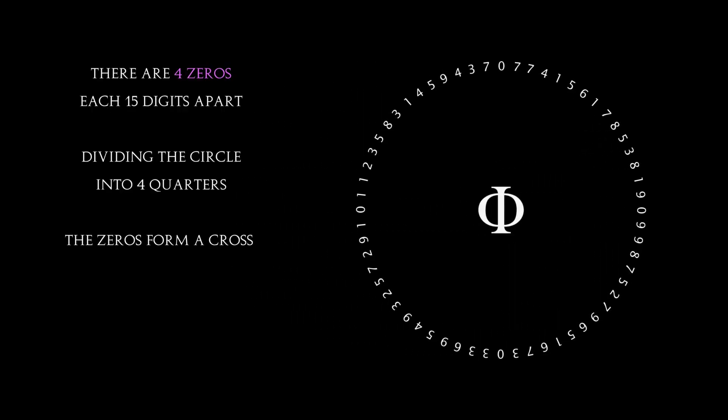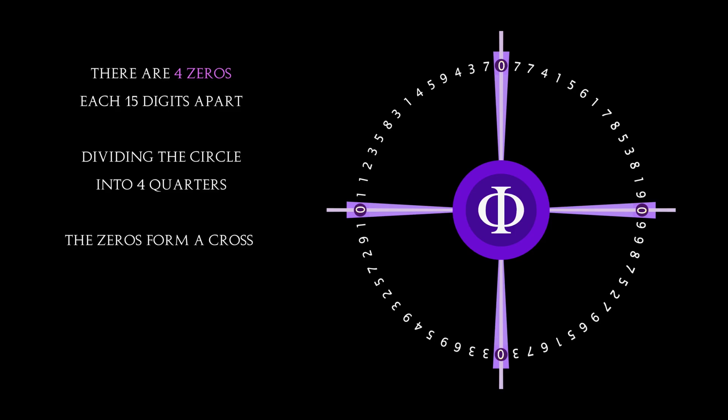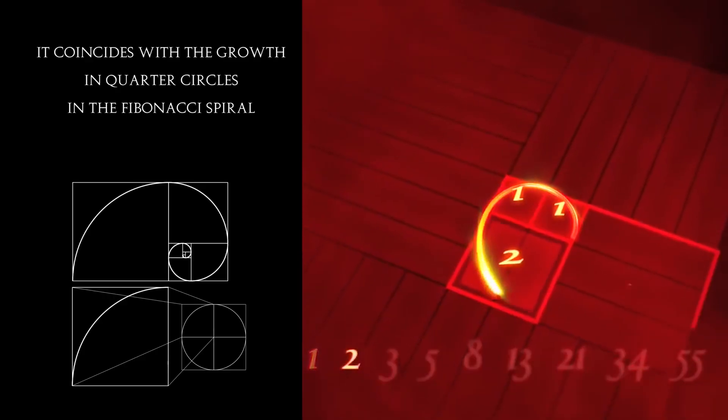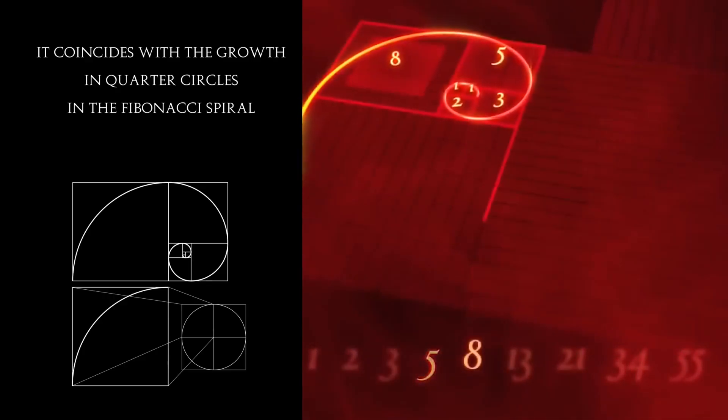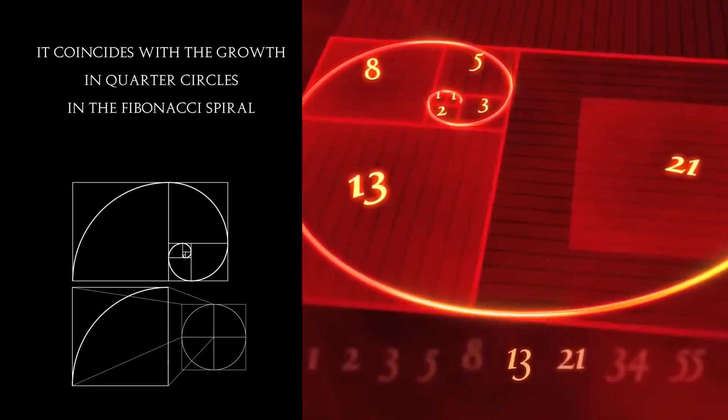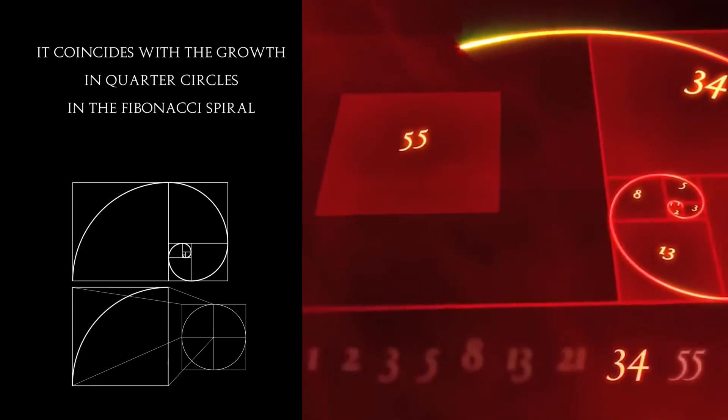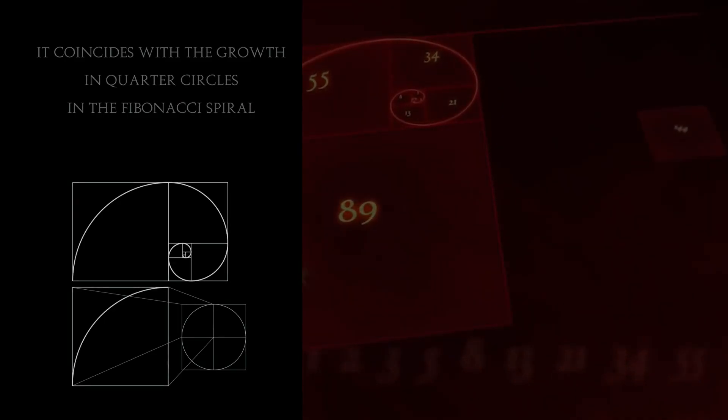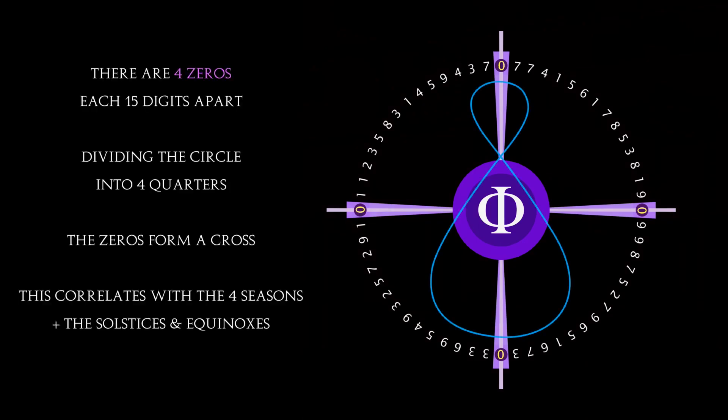Take the 60 numbers and form them into a circle like a clock. Four quarters appear, defined by the number zero, making a cross. This coincides with how the golden spiral grows in quarter circles, and it also coincides with the four seasons, defined by the solstices and the equinoxes.